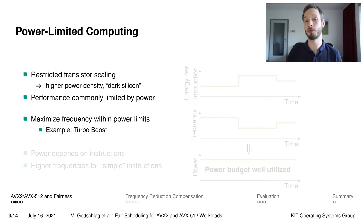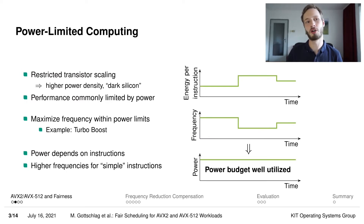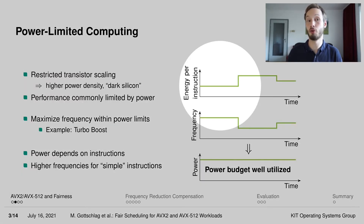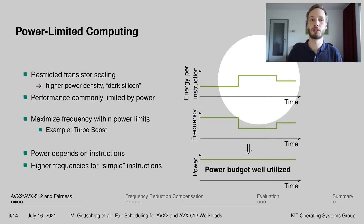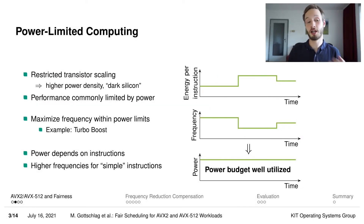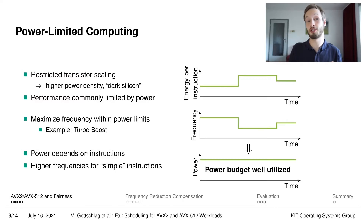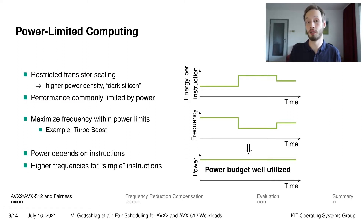For example, Intel Turbo Boost increases the frequency whenever some of the CPU cores are inactive. However, power consumption not only depends on the number of active CPU cores, it also depends on the transistor switching activity within those individual CPU cores, or in other words on the complexity of the operations executed. So if we have a system that first executes code which only uses very low power instructions, but then there is code which uses more power-intensive instructions, then ideally the system would execute the low power code at a very high frequency and the more power-intensive code at a lower frequency, because only this kind of frequency management actually allows the system to fully utilize its whole power budget at all points in time and to provide maximum performance for all these different types of code.